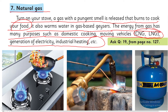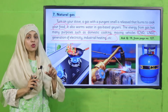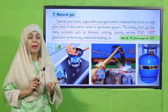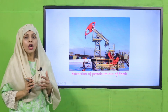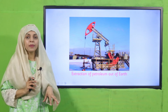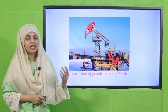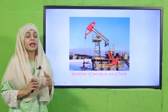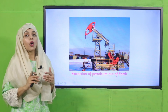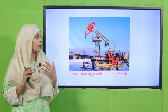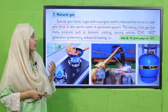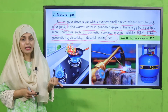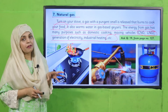Jab aap apne ghar mein chulhe ko on karti hain toh uske andar ek gas release hoti hai jiski awaaz bhi aati hai aur aap usko smell bhi kar sakti hain — isko natural gas kaha jata hai. Ye gas bhi zameen se nikalti hai. Is gas ko vehicles mein bhi use kiya jata hai CNG ki form mein. Isko cooking ke liye, geyzers mein paani garam karne ke liye, electricity produce karne ke liye, aur industrial heating ke liye bhi istamal kiya jata hai.